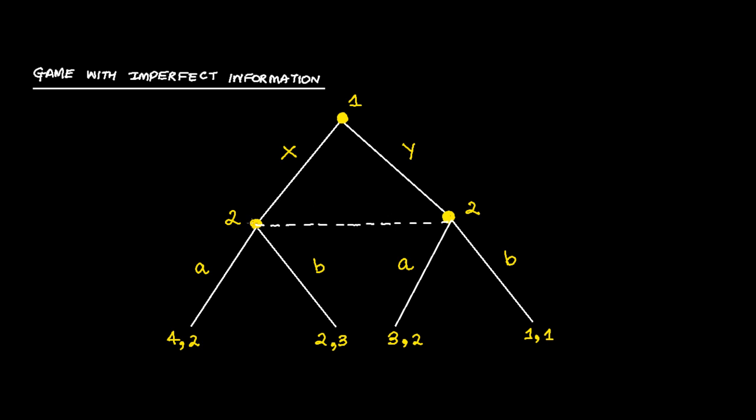The other thing is both the nodes in this information set pertain to the same player. Another thing: when player 2 is sitting at these nodes, he doesn't know at which node he is sitting, either here or here. That would mean he doesn't know whether player 1 has chosen x or he has chosen y.